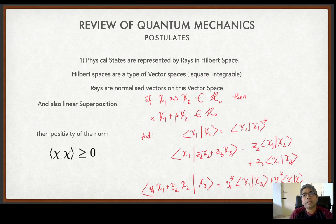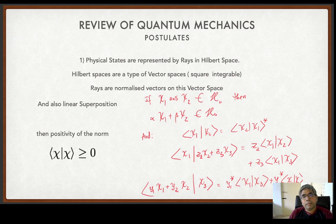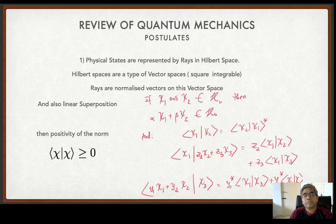You have Hamiltonian and Lagrangian equations of motion which tell you how the particle transforms under various interactions. Now in quantum mechanics, instead of the ordinary x, y, and z space, you have some other space called the Hilbert space. This Hilbert space is also a linear vector space, but it is a complex linear vector space. Physical states — as in quantum mechanics, physical states of a particle — lie on rays in this Hilbert space. A ray is simply a normalized vector.